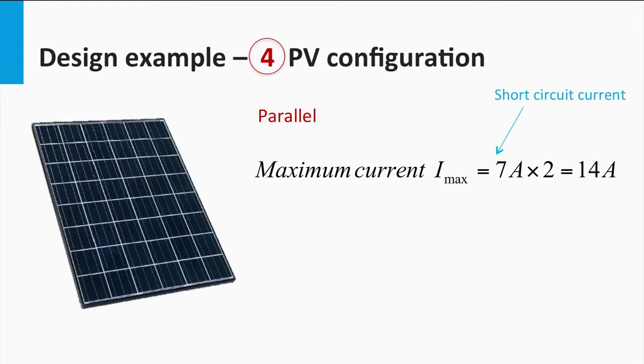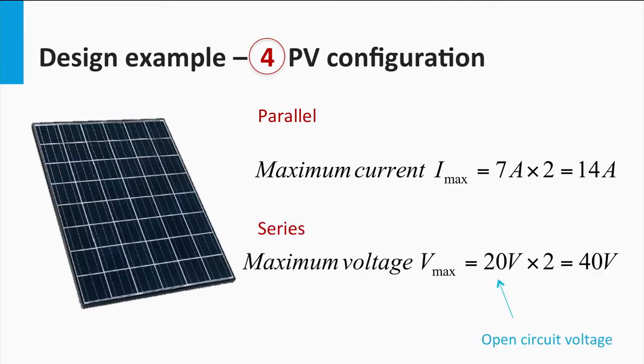Now, let us look at the possible PV configurations. The maximum allowable current and voltage rating can be found by assuming these scenarios. If the two panels are connected in parallel, then a maximum current of 2 times the short circuit current is possible, which in this case is 40 amps. On the other hand, if the two panels are connected in series, then a maximum voltage of 2 times the open circuit voltage is possible, which will equal 40 volts.